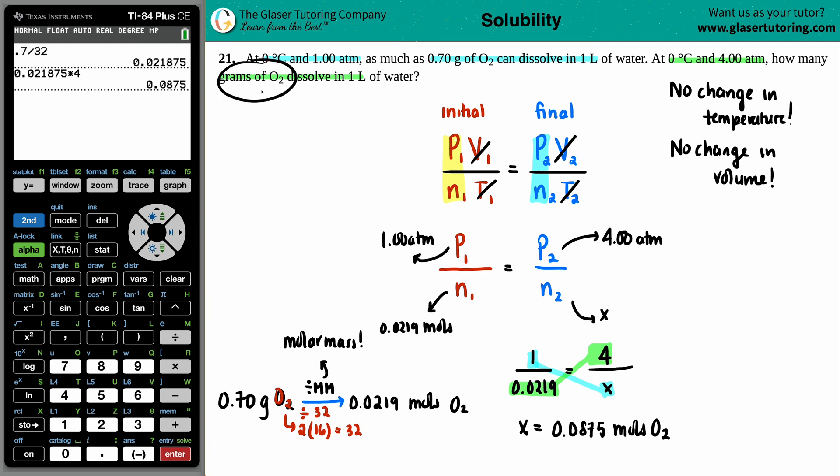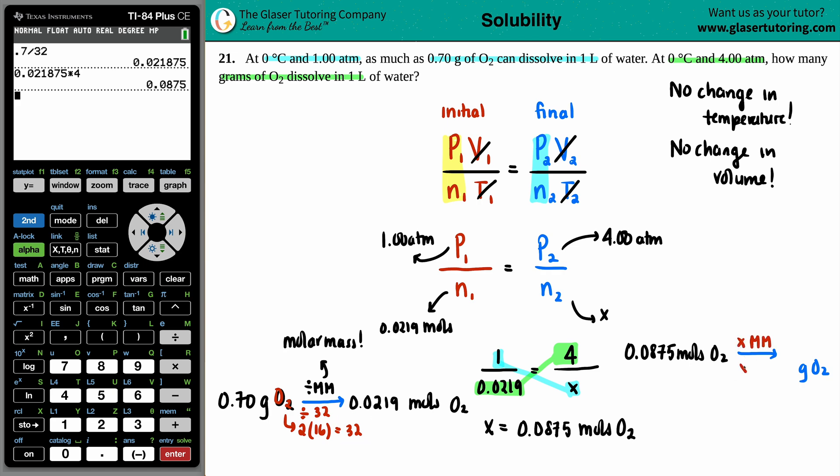But they wanted grams. So I just have to do a quick little conversion. So 0.0875 moles of O2. If I want to find out the grams, now I'm going backwards. Moles to grams, you multiply by the molar mass. We did the math already that it was 32. So I just have to take that number and times it by 32. And I get 2.8 grams. And that is the final answer.